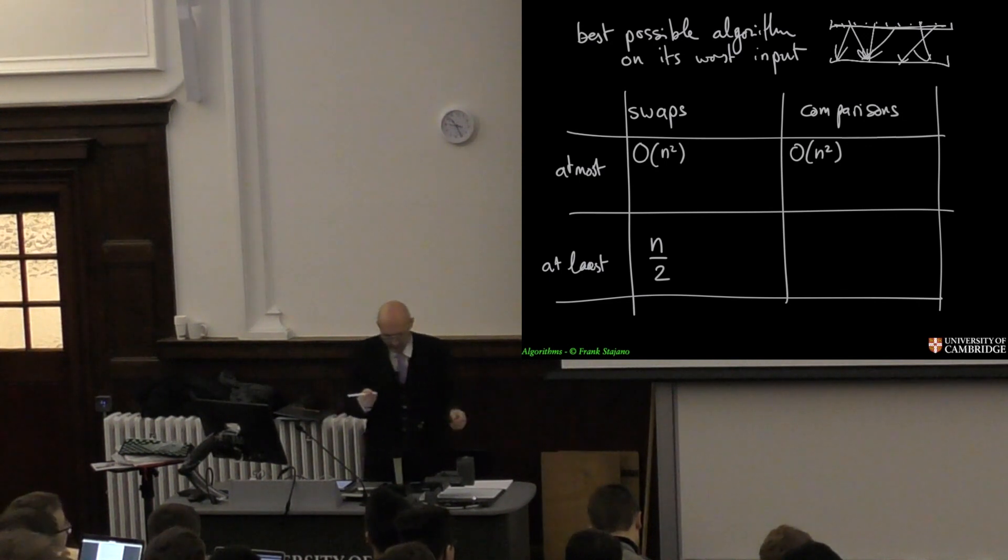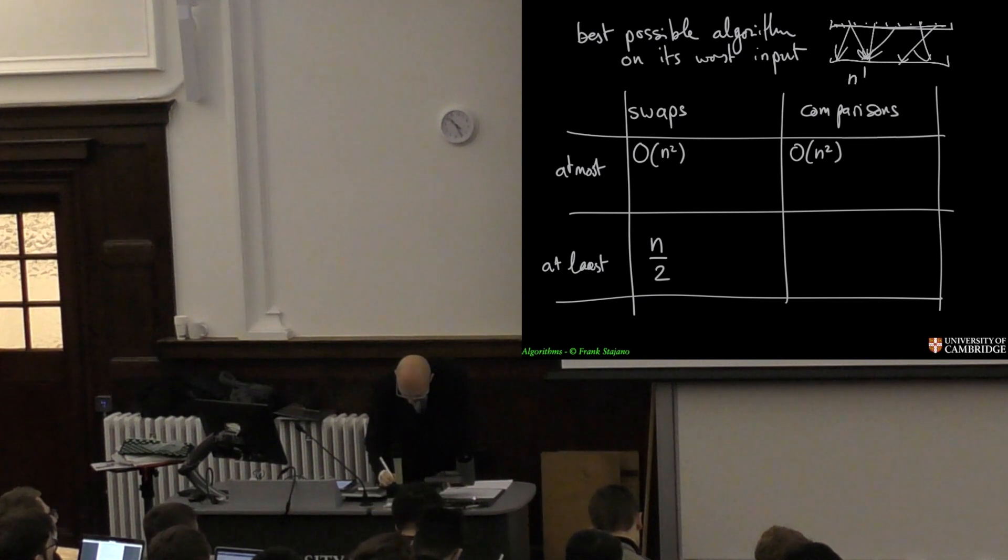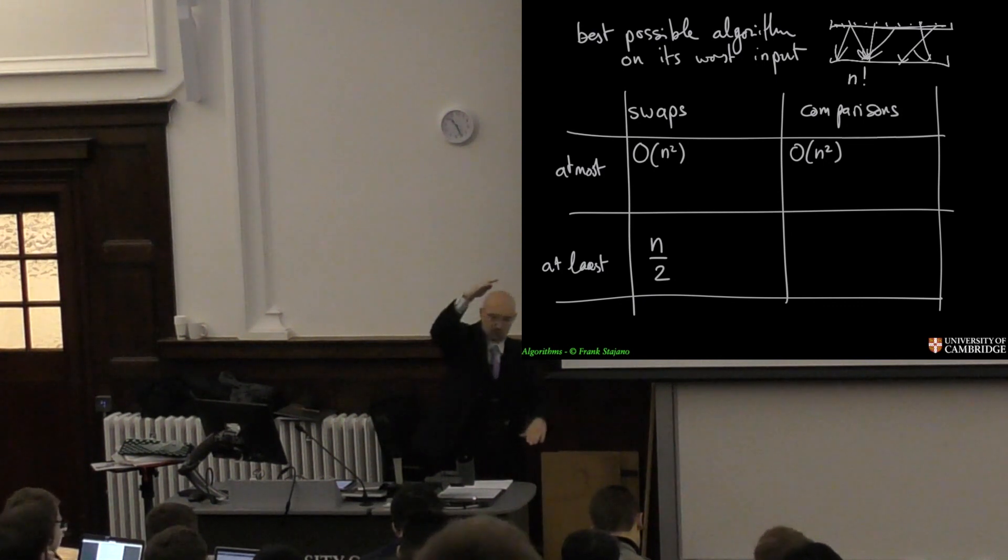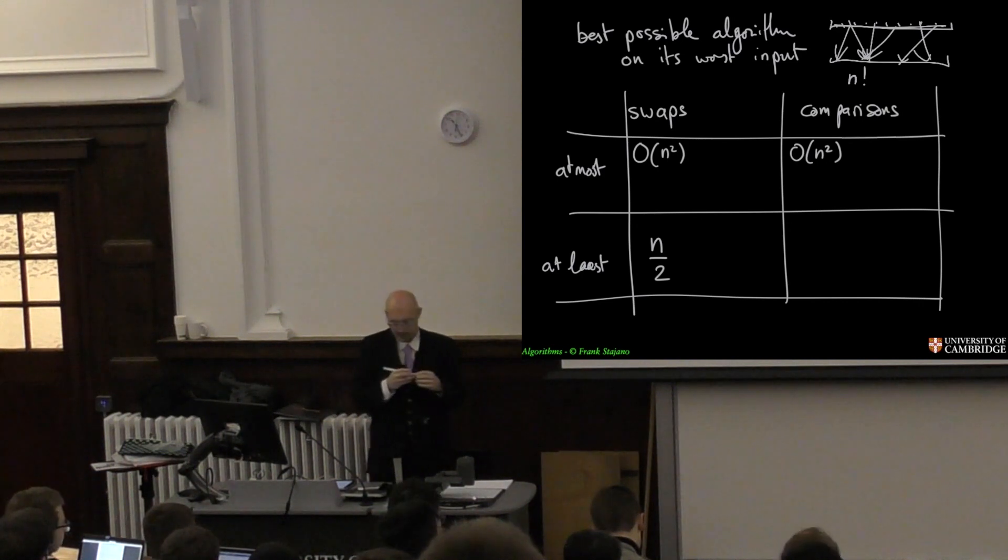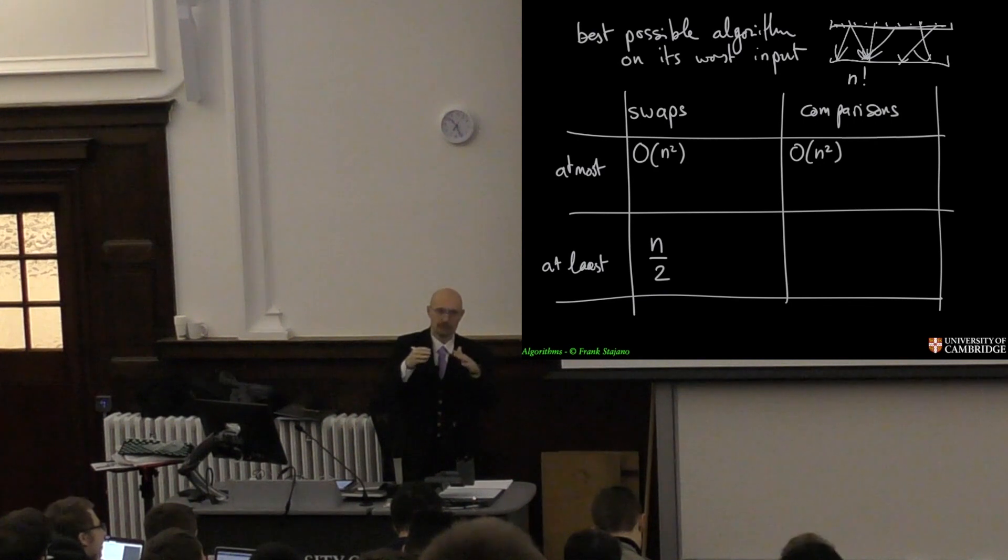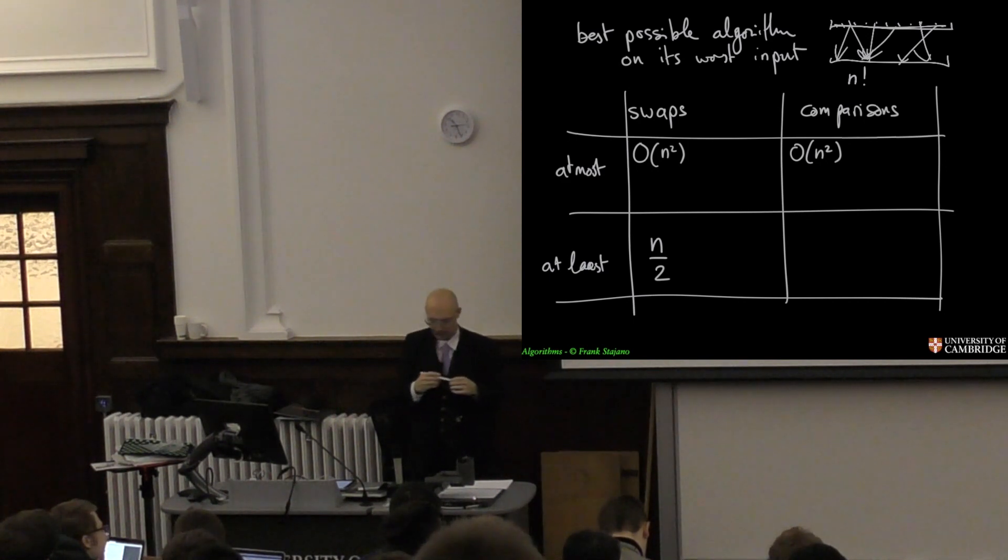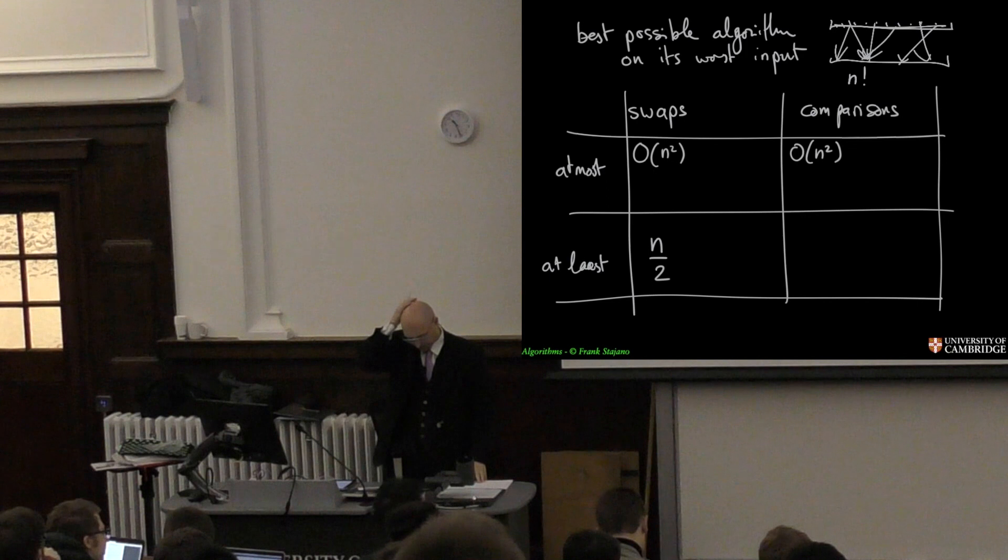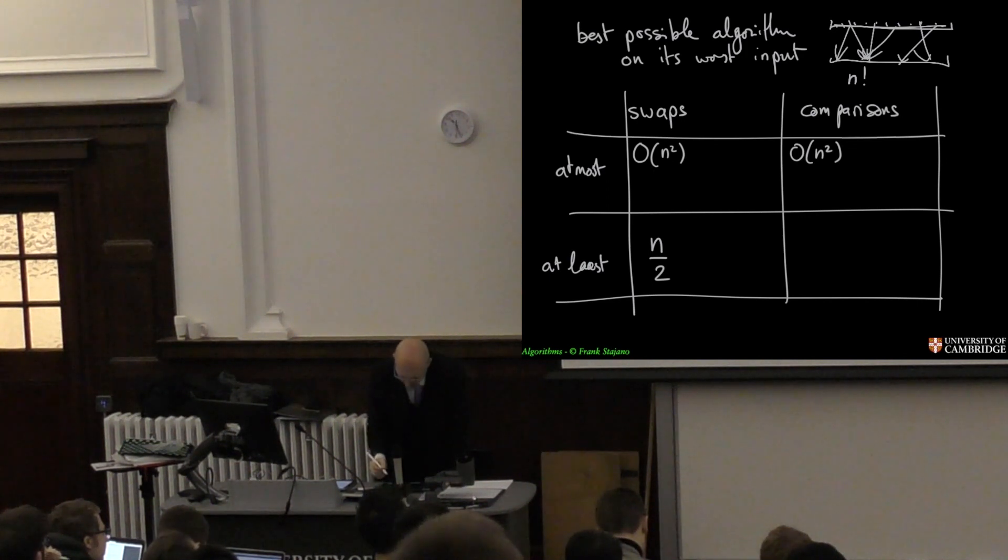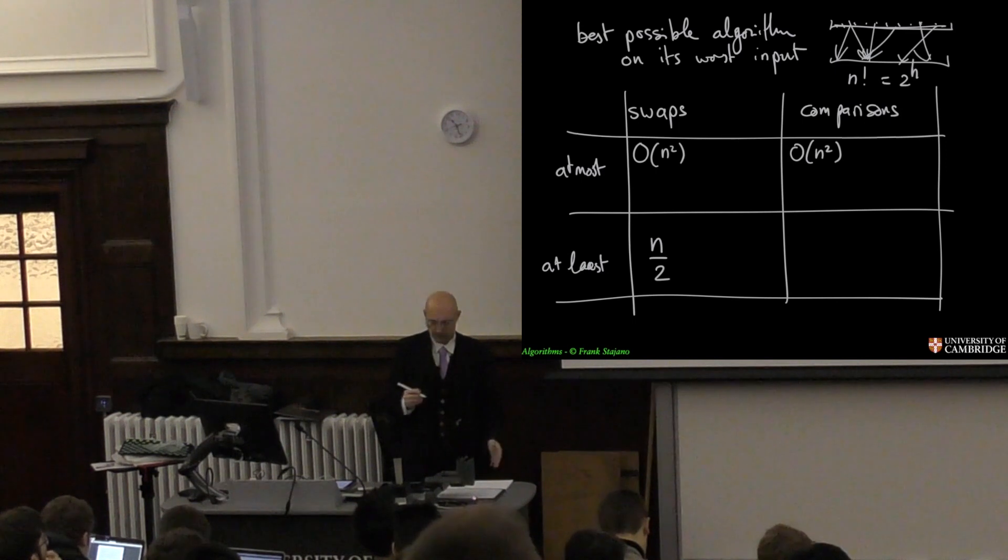So how many permutations are there of n items? That's an easy combinatorial thing, there's n factorial permutations. So how tall is a binary tree with n leaves? If the binary tree is perfectly balanced, then at every level the number of leaves grows by a factor of two, and so for a height of h I will have two to the h leaves. And so imagining the tree is perfectly balanced, because if it's not perfectly balanced I will have to pay even more, I would have to have an even higher height. Then the number of leaves being this would have to be equal to two to the h height of the tree.